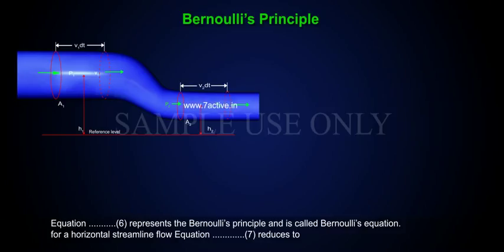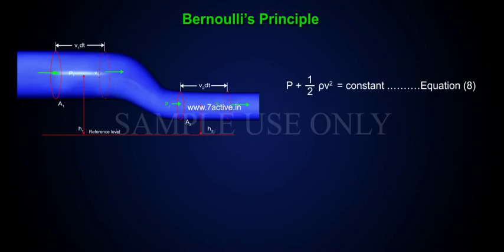For a horizontal streamlined flow, equation 7 reduces to P plus 1 by 2 rho V square is equal to constant, equation 8.